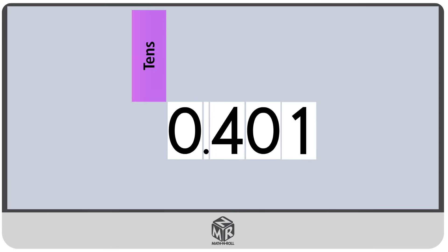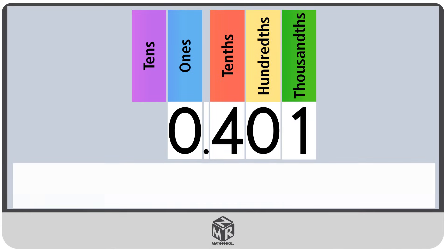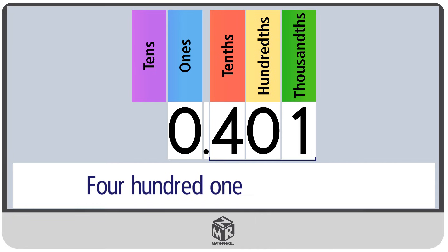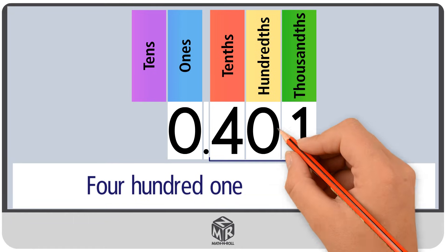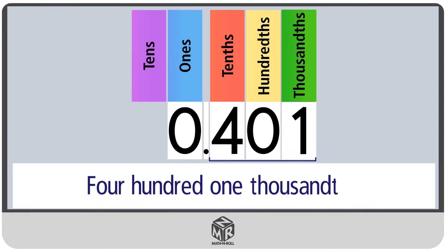Let's do another example. Write the decimal part: 401. Now take a look at the place value of the last digit. The last digit is 1, and it's in the thousandths place. So we write 401 thousandths.